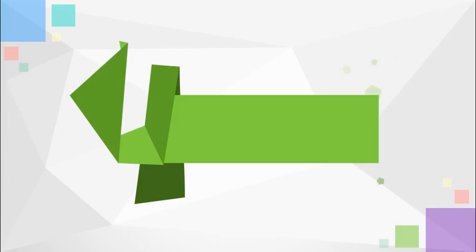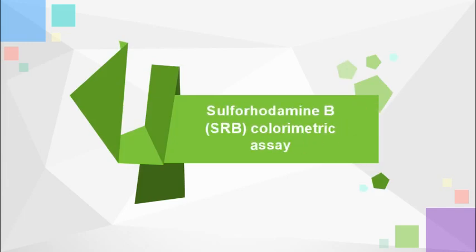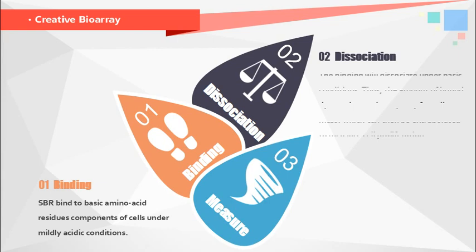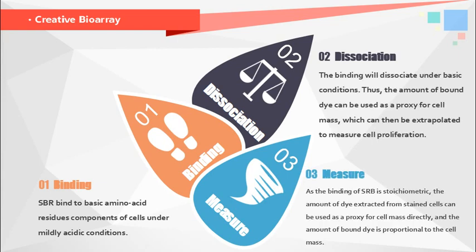Sulforhodamine B (SRB) assay was developed in 1990 and is one of the most widely used methods for in vitro cytotoxicity screening. The assay relies on the ability of SRB to bind to protein components of cells. SRB is a bright pink aminoxanthene dye with two sulfonic groups that bind to basic amino acid residue components of cells under mildly acidic conditions and dissociate under basic conditions. As the binding of SRB is stoichiometric, the amount of dye extracted from stained cells can be used as a proxy for cell mass, and the amount of bound dye is proportional to cell mass.